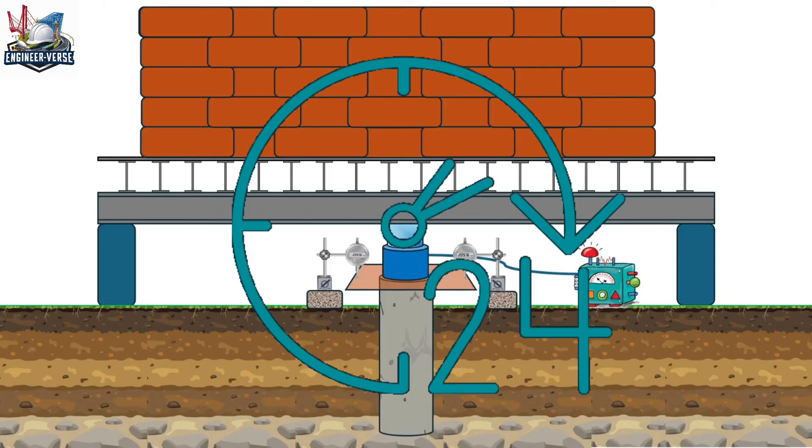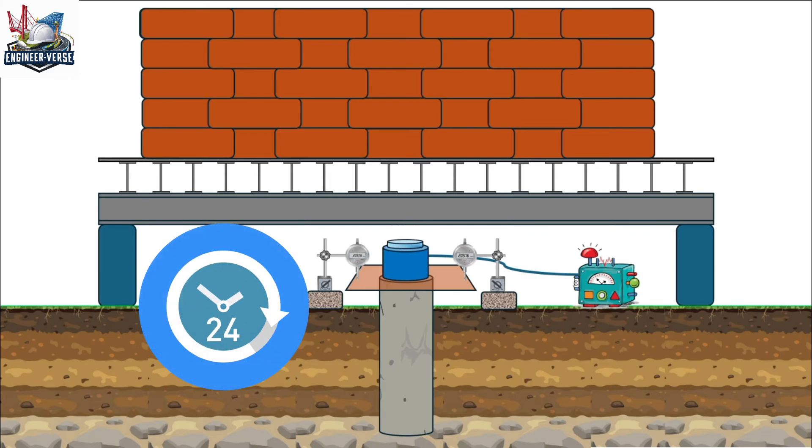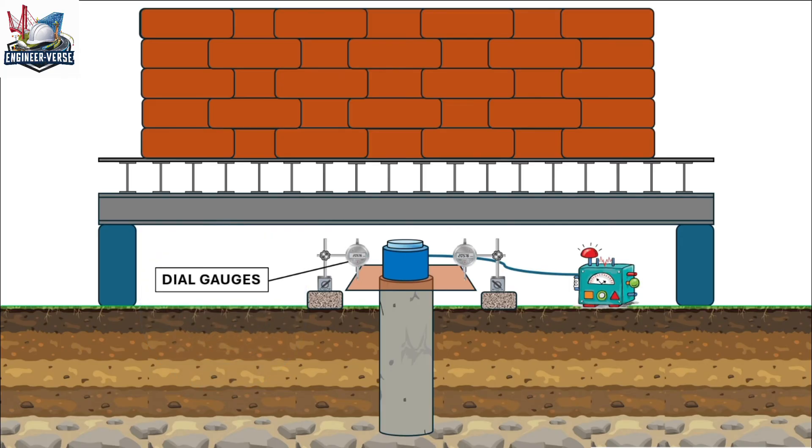This pile load test is carried out for 24 hours. The total settlement of the pile is recorded in the dial gauges over the 24 hours. If the settlement of the pile is beyond the permissible limit, then the pile is said to have failed.